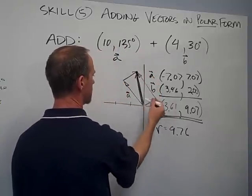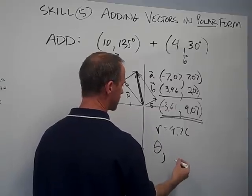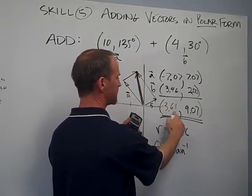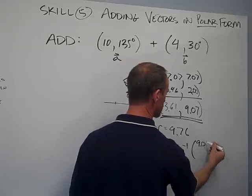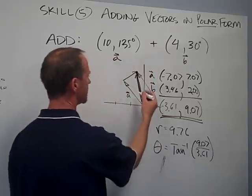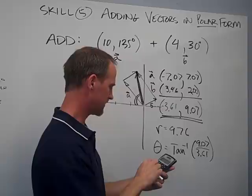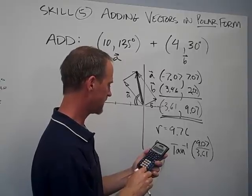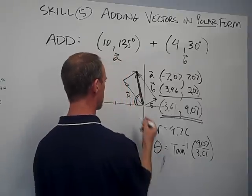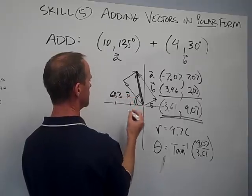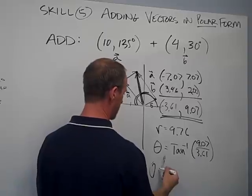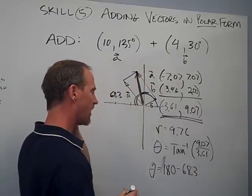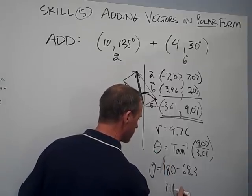Then theta, the angle, is going to be the inverse tangent of 9.07 over 3.61 using the absolute values. That gives me the reference angle. When I do second tangent of 9.07 divided by 3.61, I get 68.30 degrees. Since this is in the second quadrant, the actual angle theta is 180 minus 68.3, which gives 111.7 degrees.